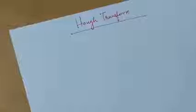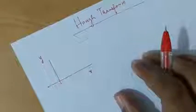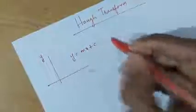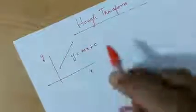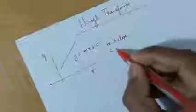For example, we have to find out and detect lines using Hough Transform. I am drawing an XY plane. We all know the equation of a straight line in slope-intercept form, that is y equals mx plus c. Here, m is called the slope of that particular straight line and c is the intercept.